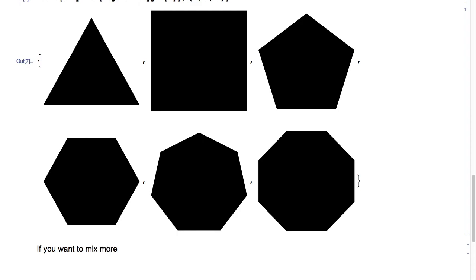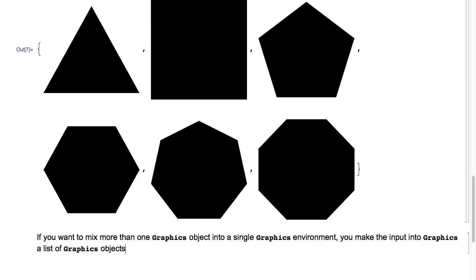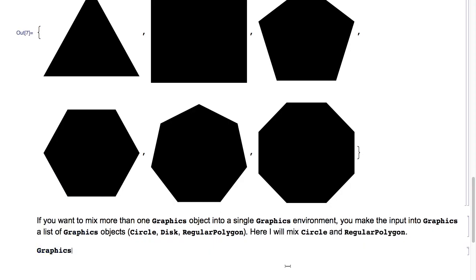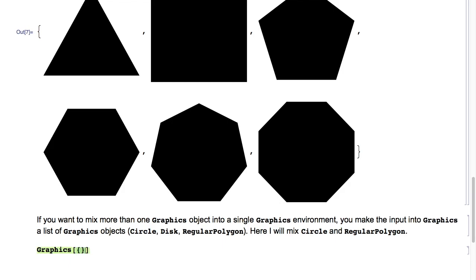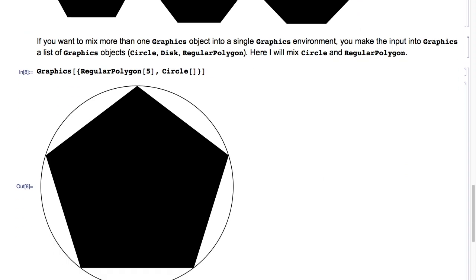If you want to mix more than one graphics object into a single graphics environment, you make the input into Graphics a list of graphics objects — for example, a Circle, Disk, or RegularPolygon. Here I will mix Circle and RegularPolygon. So I'll type Graphics of the list of RegularPolygon of five, comma Circle of nothing, hit Shift+Enter, and as you can see, I get a pentagon inscribed in a circle.